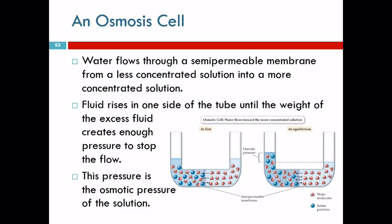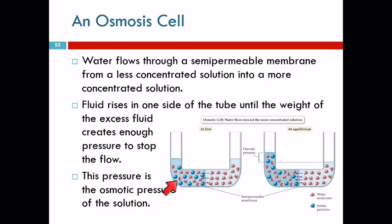We can see this happen in what is called a U-shaped tube with a semi-permeable membrane in it. Put pure water on one side and salty water on the other side, and wait. There is an equilibrium that is going to occur — we have two opposite processes: water moving from the right to the left, and water moving from the left to the right. The solute can't move through the membrane.